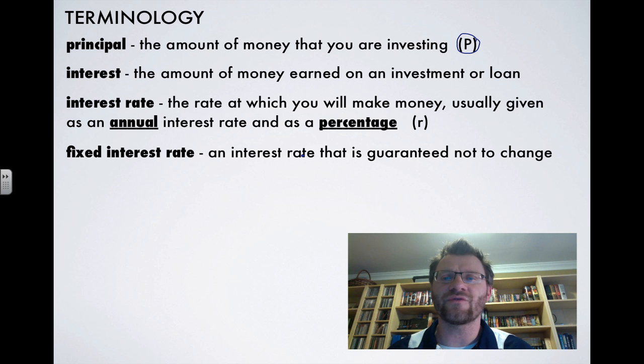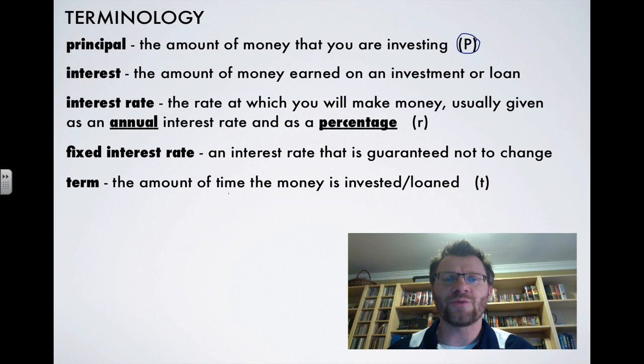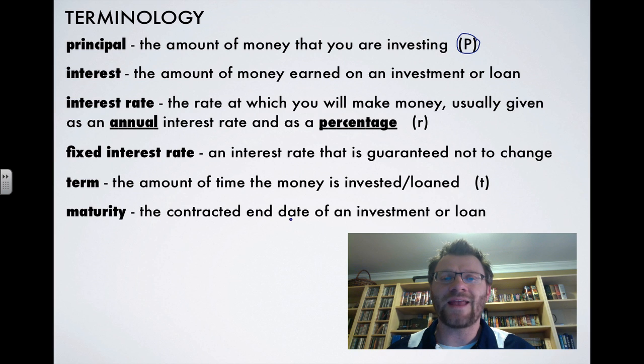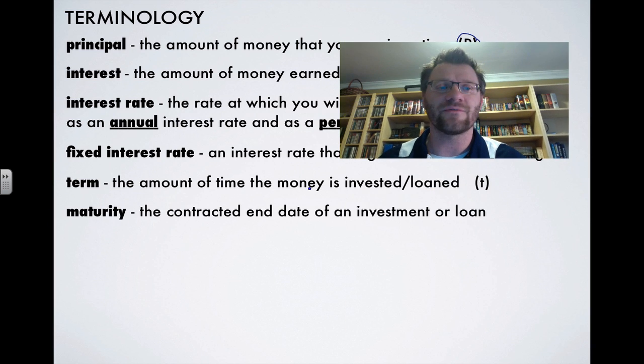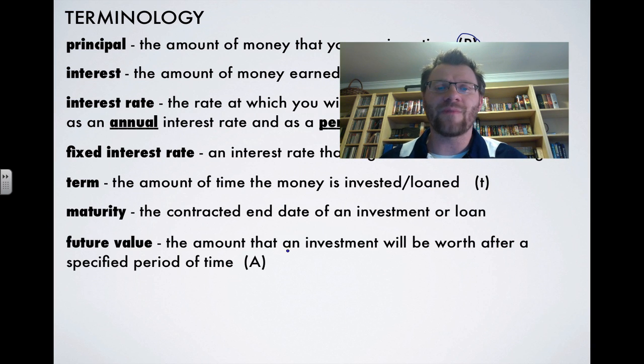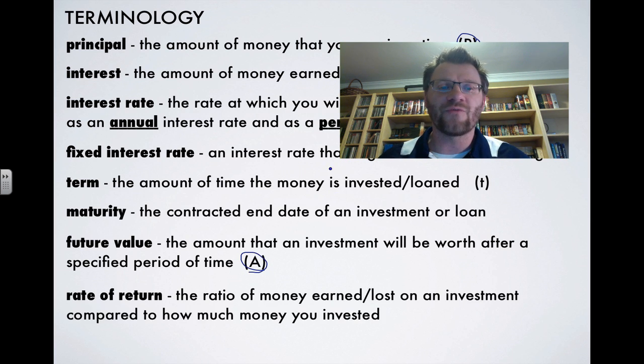A Fixed Interest Rate is an interest rate that is guaranteed not to change. The Term is the amount of time the money is invested or loaned, and we use the variable T for that. The Maturity is the contracted end date of an investment or loan. So if you invest your money over five years, it will be matured at the end of five years. The Future Value is the amount that an investment will be worth after a specific period of time, and that is the variable A. And the Rate of Return is the ratio of money earned or lost on an investment compared to how much money you actually invested.